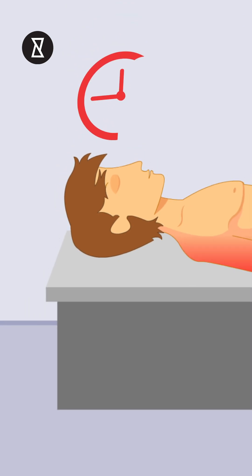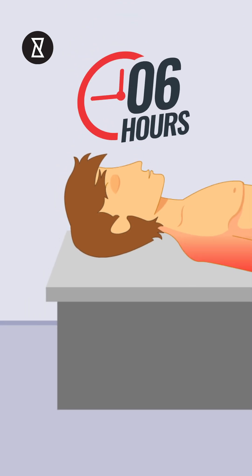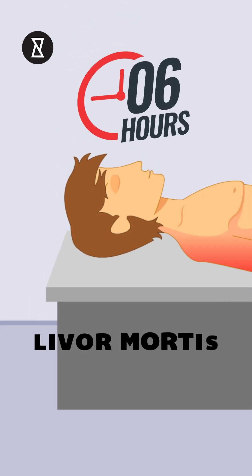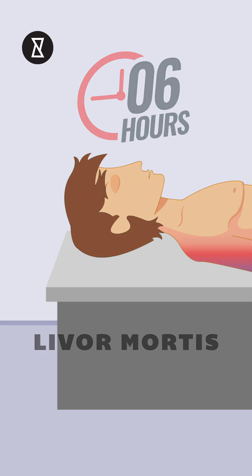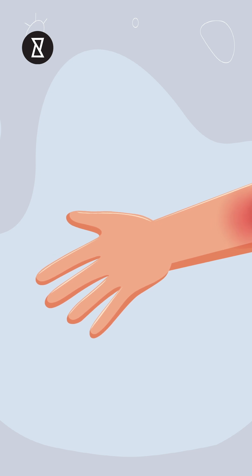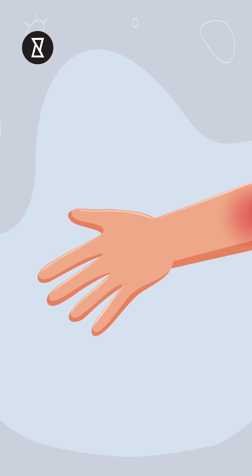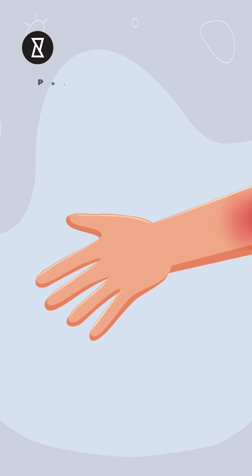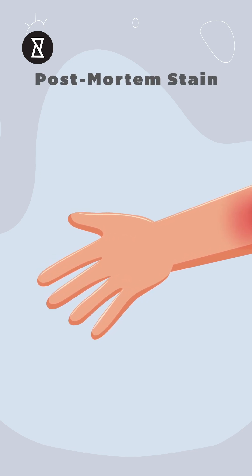In the two to six hours following death, the body will reach a state of livor mortis. As the heart is no longer pumping blood, gravitational pull forces the blood to pool towards the body parts closest to the ground. The accumulated blood at that spot can cause a reddish-brown discolouration, very similar to a bruise. It is called the post-mortem stain — a stain acquired after death.